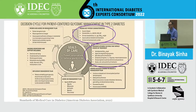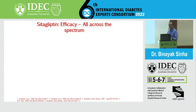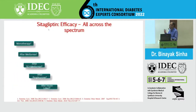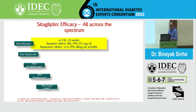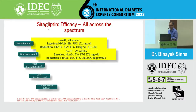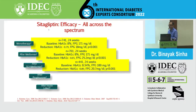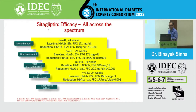The first thing we look at when starting diabetes treatment is efficacy of the molecule. Looking at the efficacy of sitagliptin across the spectrum of disease — whether early diabetes with monotherapy, dual or triple therapy, or treatment with insulin — sitagliptin leads to an improvement of HbA1c across the board, with additional reduction of fasting plasma glucose remaining statistically significant, with an HbA1c reduction of roughly 0.5 to 0.9%.